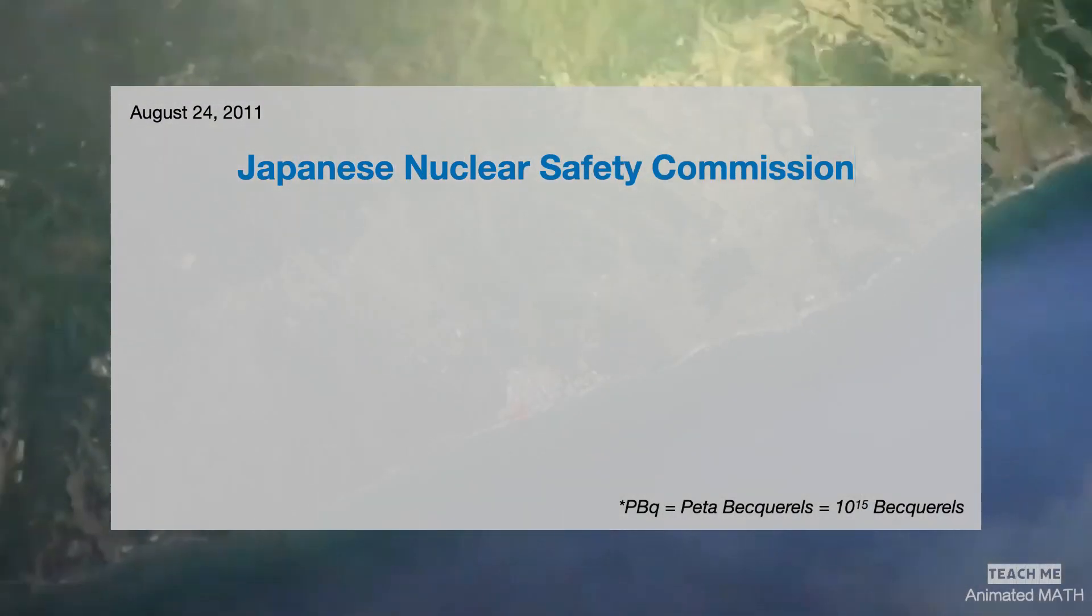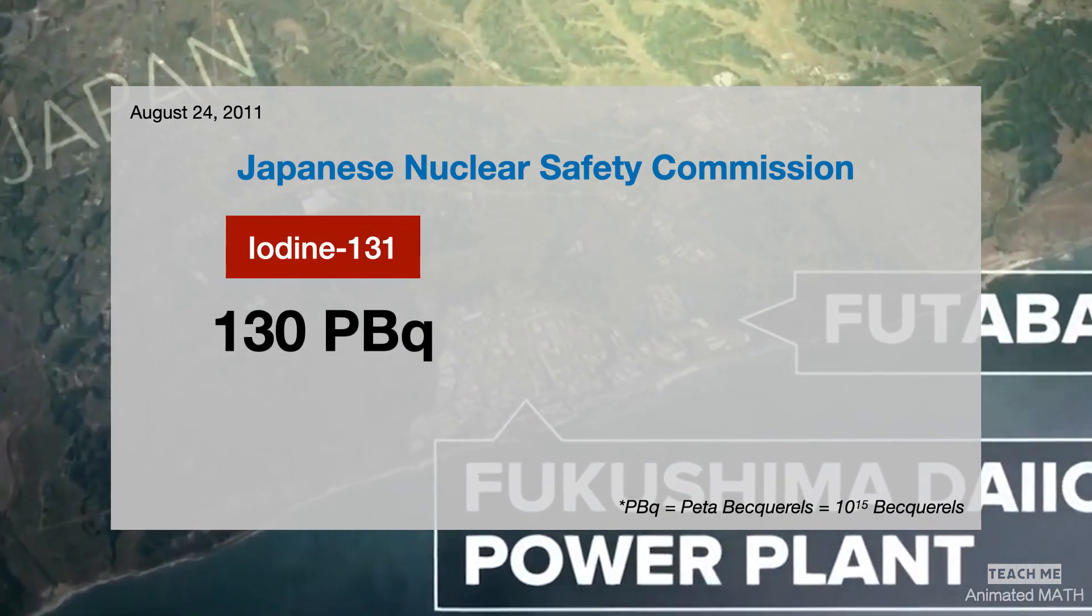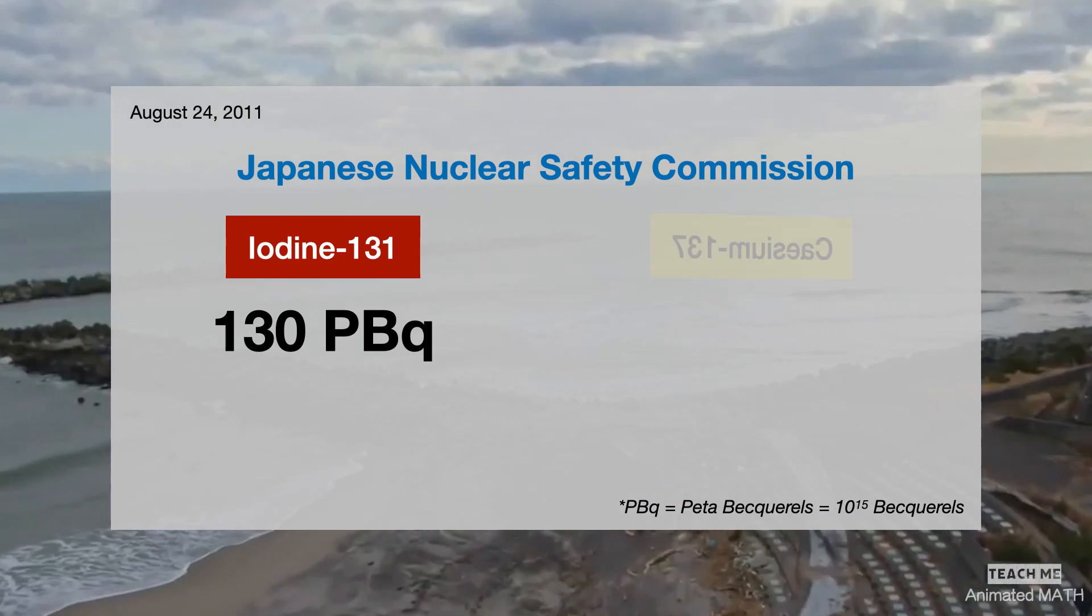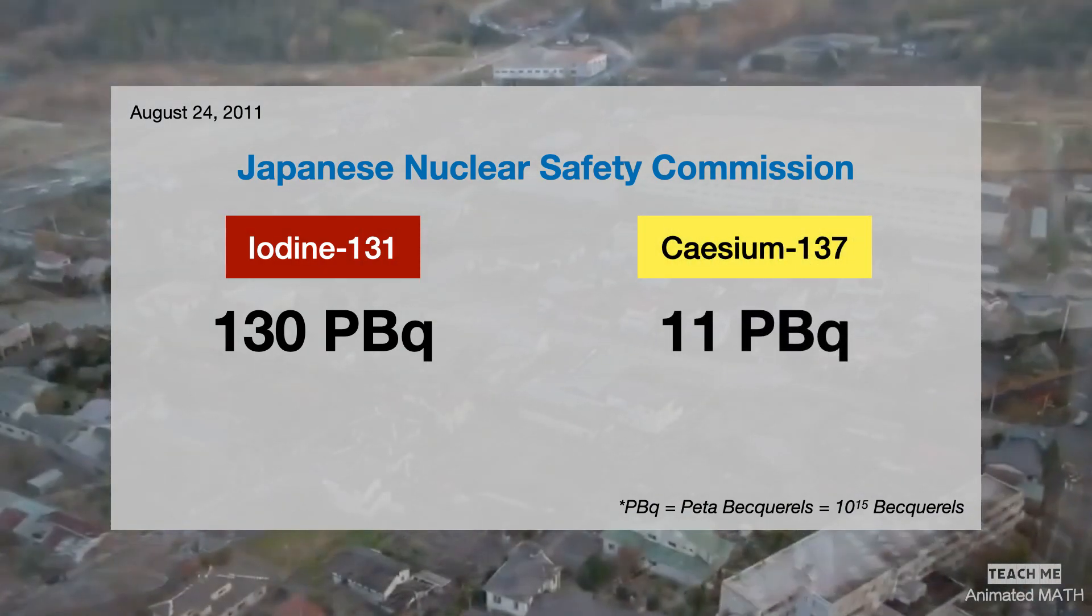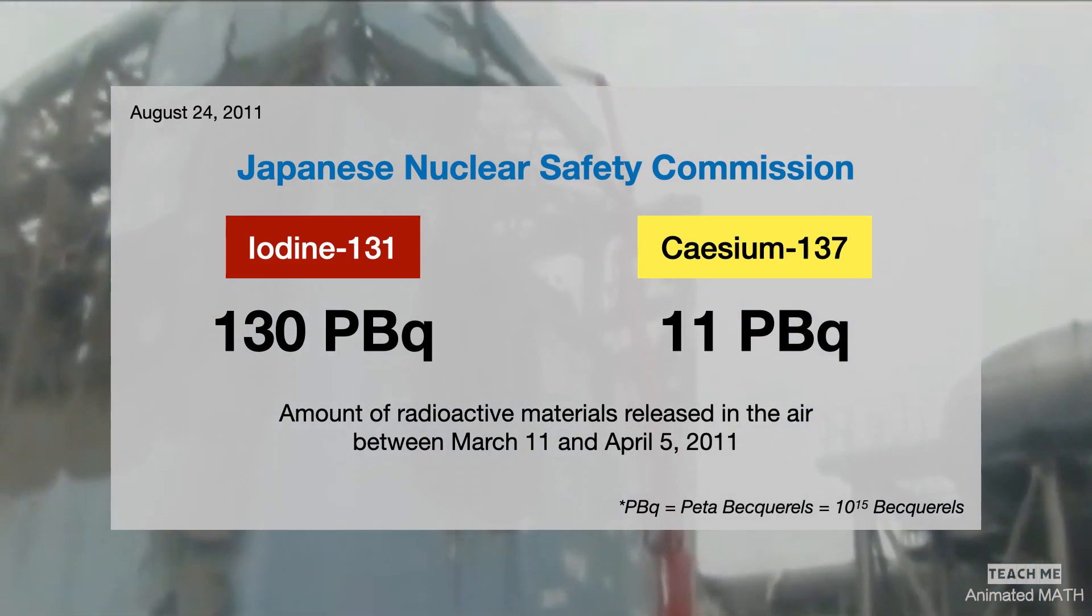the Nuclear Safety Commission of Japan reported that 130 peta becquerels of iodine-131 and 11 peta becquerels of cesium-137 were released in the air between March 11 and April 5.